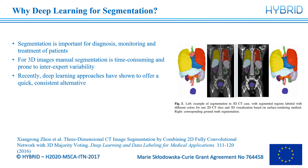On the right we have an example of an automated segmentation. In this example, different organs and tissues have been segmented on a 3D CT scan. On the left we see a deep learning based segmentation, and on the right we see the expert based ground truth. The different organs are shown in different colours, and we can see visually that the two segmentations are very similar.